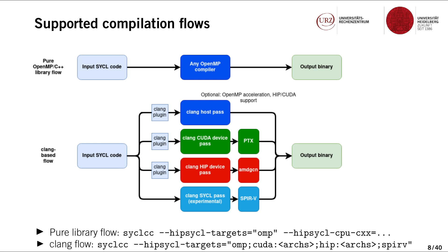As far as compilation flows are concerned, HIP-SYCL supports several. The most simple one is the pure OpenMP C++ library compilation flow, where HIP-SYCL acts as an OpenMP C++ library, allowing you to compile SYCL code with any OpenMP compiler provided it supports C++17. The most well-known compilation flow is the Clang-based flow, where HIP-SYCL combines potentially multiple Clang toolchains — such as the Clang CUDA, Clang HIP, or Clang SYCL toolchain — to generate device code for various backends such as PTX for CUDA and AMD GCN for AMD. It takes those compiled kernels, puts them all into one binary, and there's a host pass that compiles for the host as well. In order to make those Clang toolchains understand SYCL code, there's a Clang plugin that teaches it those.